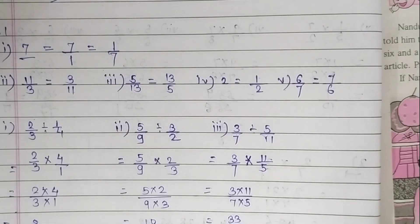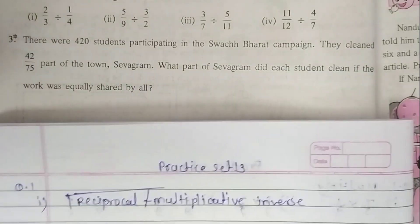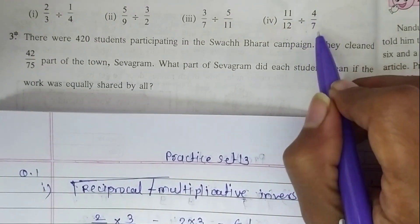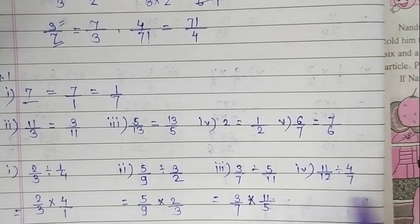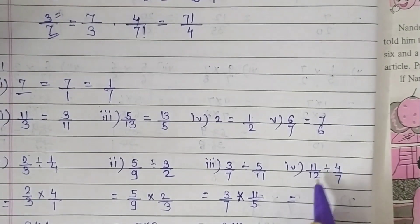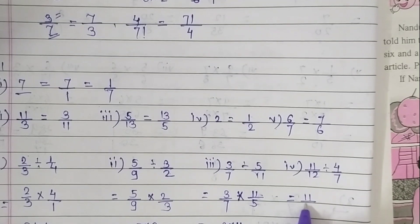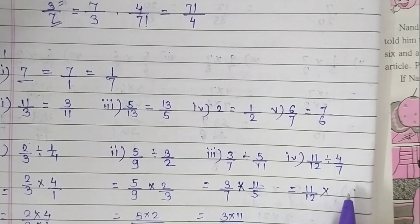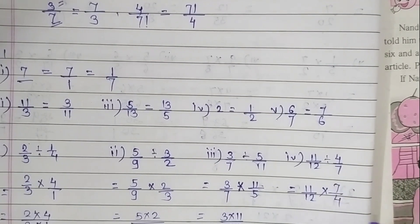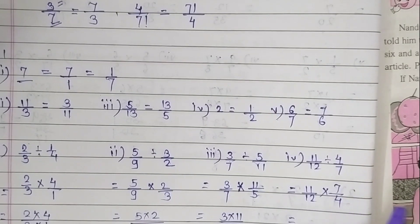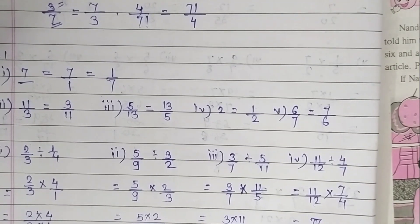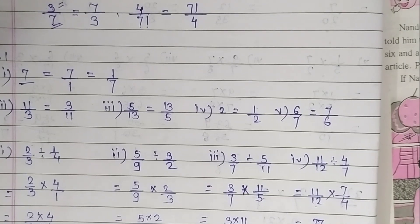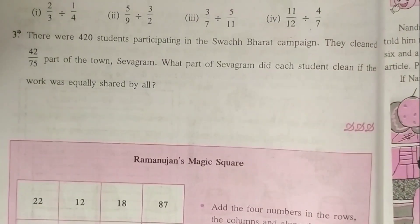The fourth question is 11 upon 12 divided by 4 upon 7. Write the fraction as it is: 11 upon 12. Remove the division sign, write a multiplication sign, then write 7 upon 4. 11 times 7 is 77, and 12 times 4 is 48. So our answer is 77 upon 48.